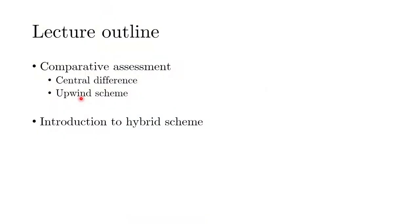We previously did some assessment to understand the central differencing scheme from a boundedness perspective, a transportiveness perspective, and an accuracy perspective. Today we will do that kind of comparison, especially from the perspective of boundedness — whether the upwind scheme remains bounded or not. The second focal point of this lecture is the introduction to the hybrid scheme, which we will formally introduce today based on our experiences with central differencing and upwind.